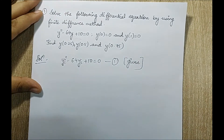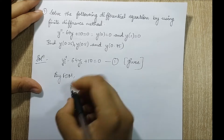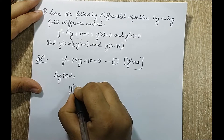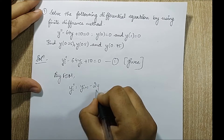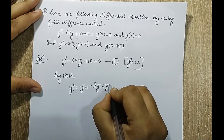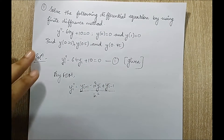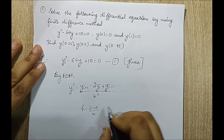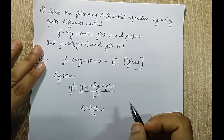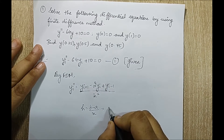By the finite difference method we know that y_i double dash has the formula: y_{i+1} minus twice y_i plus y_{i-1}, all divided by h squared. For h there is a formula: h is equal to b minus a upon n. Looking at this question, b is 1 and a is 0.